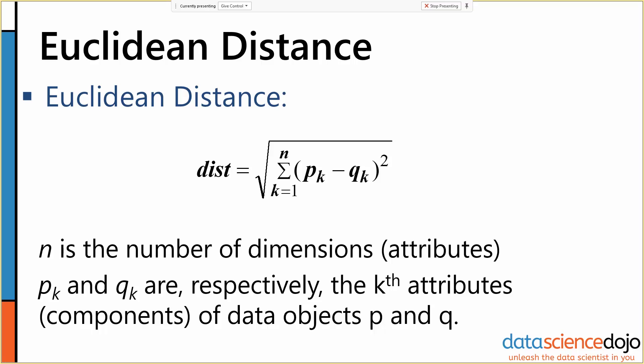So in order to calculate the Euclidean distance between two data objects, we take the difference in each attribute value, square it, sum that, and take the square root.